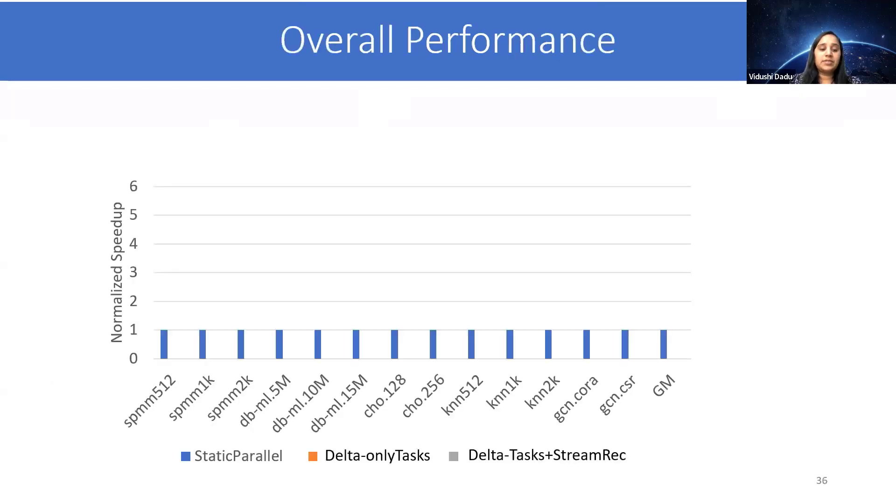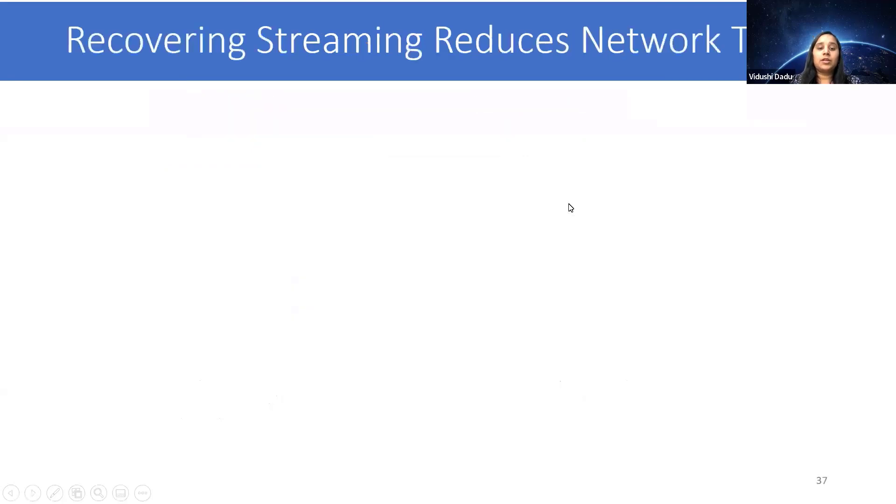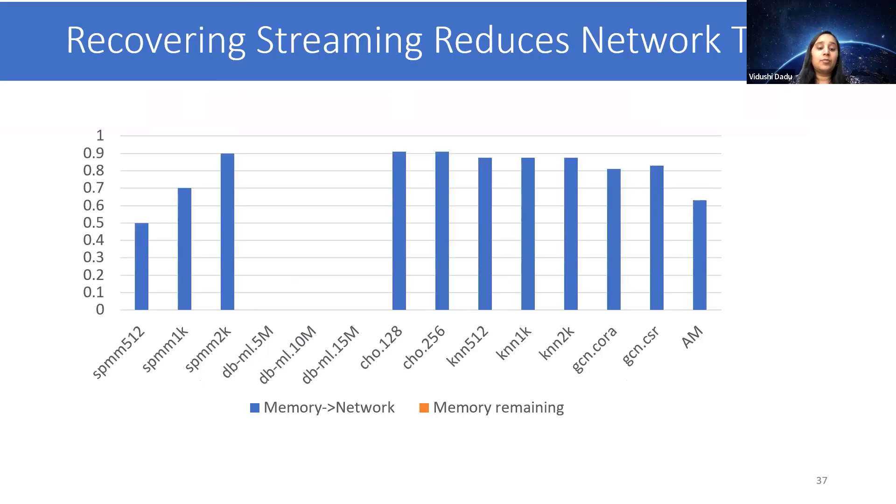In terms of overall performance, we normalize the speedup over static parallel execution. With tasks, we can get some speedup. However, the speedups are only moderate as they are still limited by the inter-task dependencies. With stream recovery, the performance is boosted. For example, in Cholesky, streaming optimization resulted in improved parallelism, while in KNN, the batching optimization resulted in improved reuse. To understand where the benefits are coming from, in this plot, we determined how much memory traffic was converted to pure network traffic using our stream recovery edges. So what we find is that more than 50% of the traffic in most of the workloads is converted to the network traffic, and only a few remain. And that was the source for speedup.